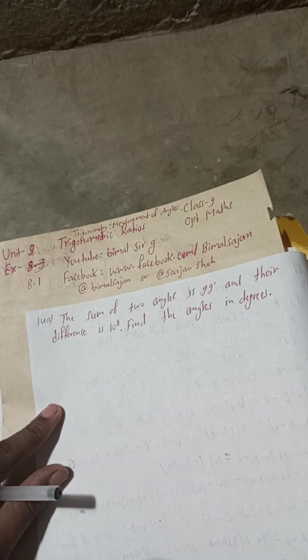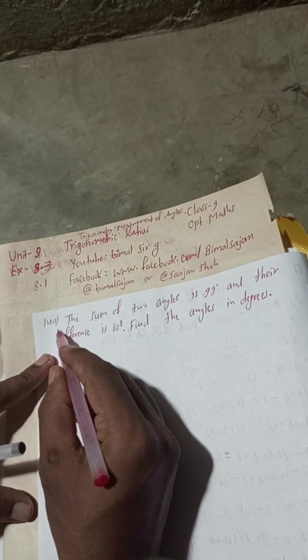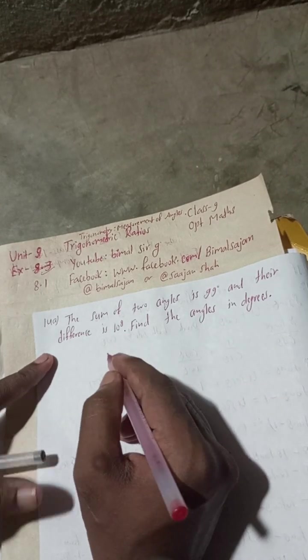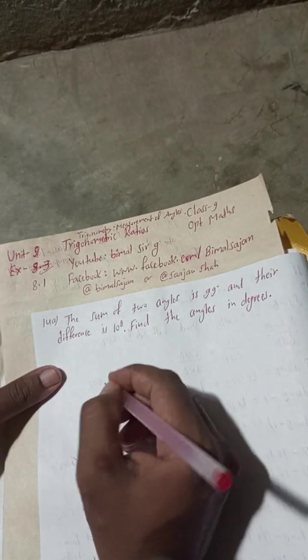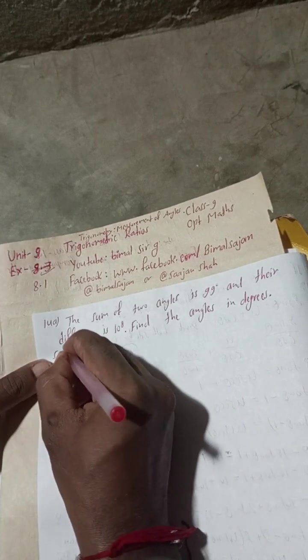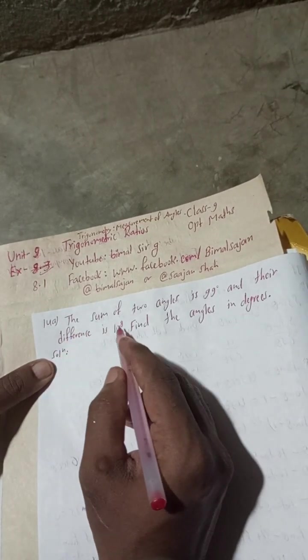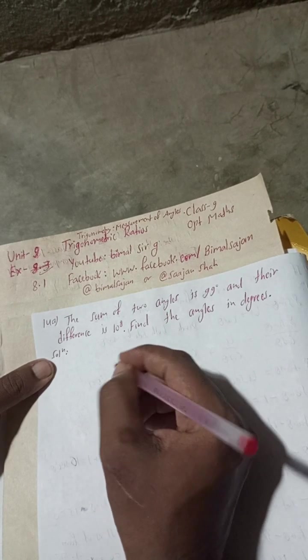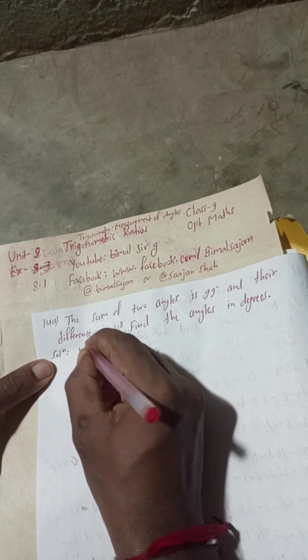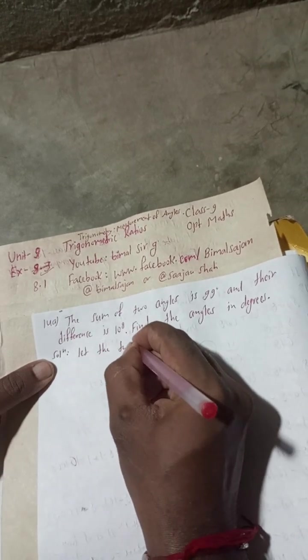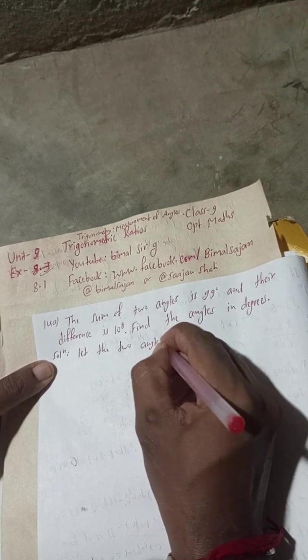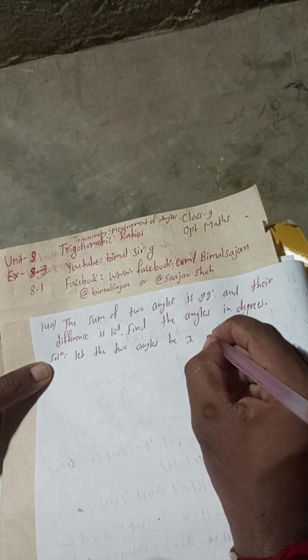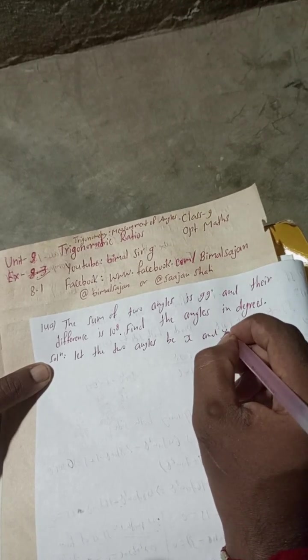So keep watching, keep supporting. Let's begin the solution. 14a: The sum of two angles is 99 degree and their difference is 10 grade. Find the angles in degrees. Solution: Let the two angles be x degree and y degree.